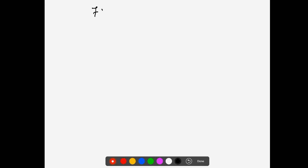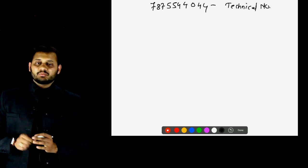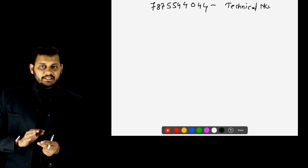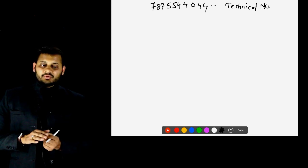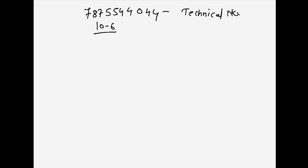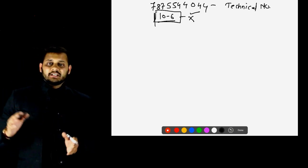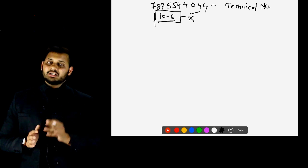If you face any technical problems and need help, the technical team contact number is 787-5544-044. If your video lectures are not running or there's any issue, contact them. Make sure you read the installation guide very carefully first, because they are only available from 10 AM to 6 PM. During lunch time they may not be available, and if they're attending another call, that time will also be lost — so to avoid unnecessary irritation and frustration, read the installation guide thoroughly before contacting them.